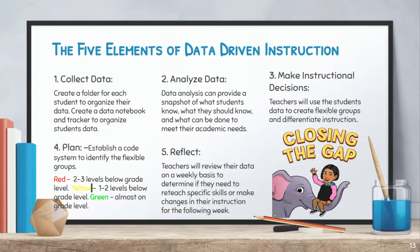Step three, make instructional decisions. Teachers would use the student's data to create flexible groups and change their instruction if needed. Step four, this is a time to plan. Please establish a code system to identify the flexible groups. You can use red for students working two to three grade levels below, yellow for students working one or two grade levels below grade level, and green for students almost on grade level. Step five, reflect. Teachers will review their data on a weekly basis to determine if they need to reteach certain skills or make changes in their instruction for the following week.